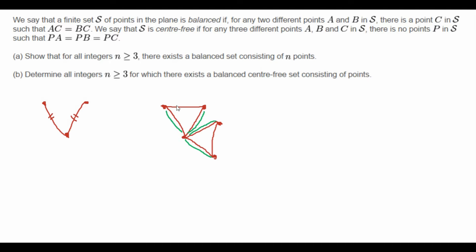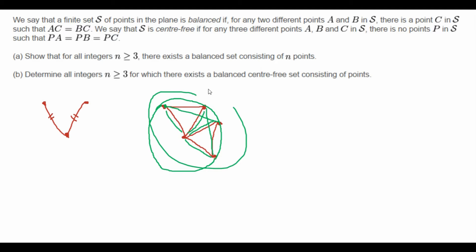How do we make sure those cross-triangle pairs also satisfy the condition? Since these equilateral triangles all have the same side length, we can draw a circumscribed circle around all the points. We know that for any two points on the circumference of the circle, their perpendicular bisector intersects the center of the circle. So for any pair of points — no matter which pair — both points lie on the circumference, meaning the center satisfies AC equals BC. That distance is the radius of the circle.